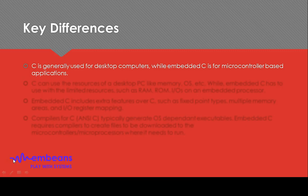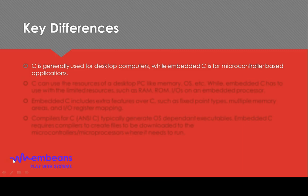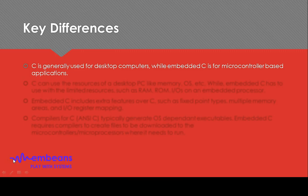If we look into the basic history of C language, C is basically one type of computer programming language. C was originally developed by Dennis Ritchie at AT&T labs between 1969 and 1973. It has a free format programming source code and is a general purpose programming language.